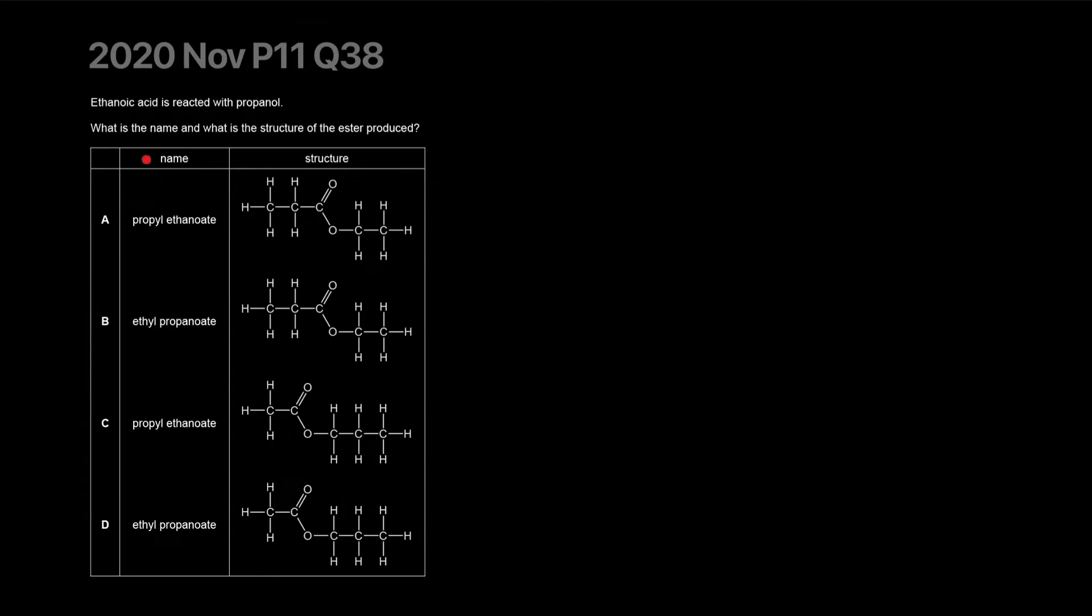Ethanoic acid reacts with propanol. What is the name and structure of the ester produced? The idea about esters is that it gives you a something-yl and something-noate. Ethanoate - this is the alcohol part. The alcohol turns into alkyl. And the acid ethanoic turns into ethanoate. So this is the acid part, ethanoic acid, it's going to be ethanoate. And propyl. That's the correct name. Propyl ethanoate.